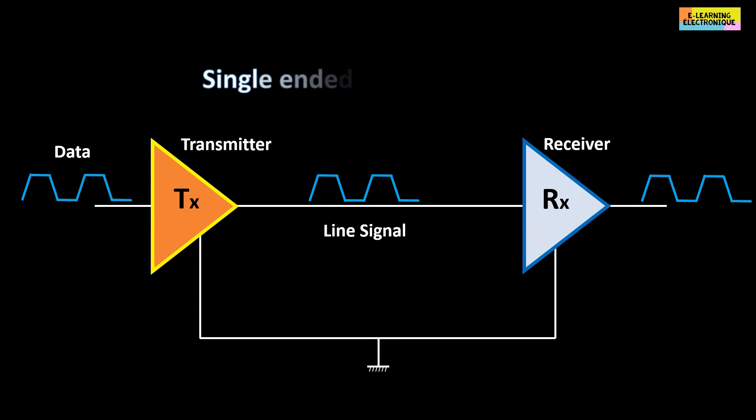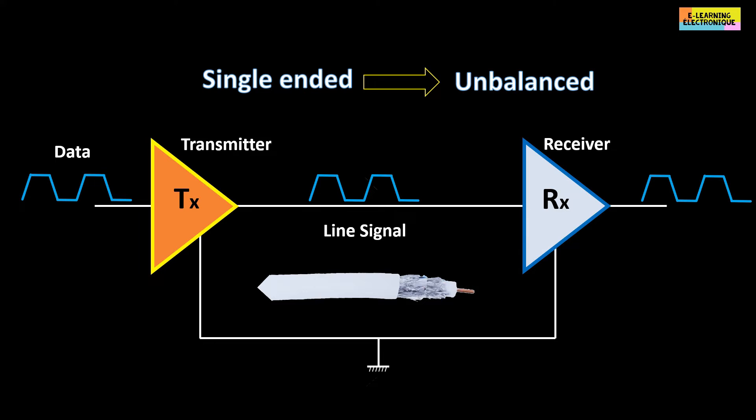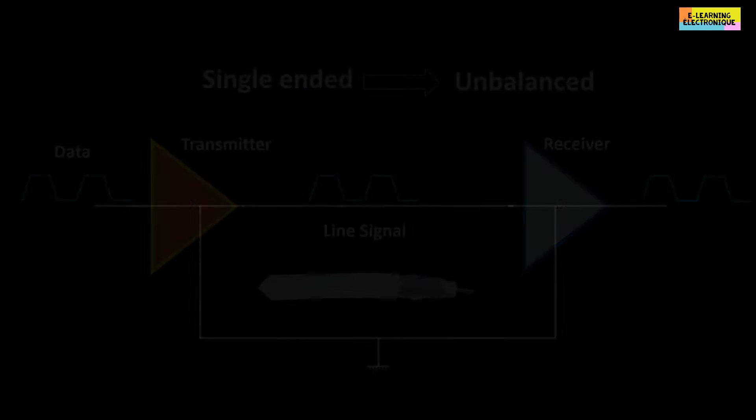This type of connection is called single-ended or unbalanced. A typical example is the connection using a coaxial cable. This type of link is sensitive to external disturbances such as electromagnetic fields and is not suitable for data transmission at very high frequencies and over long distances.